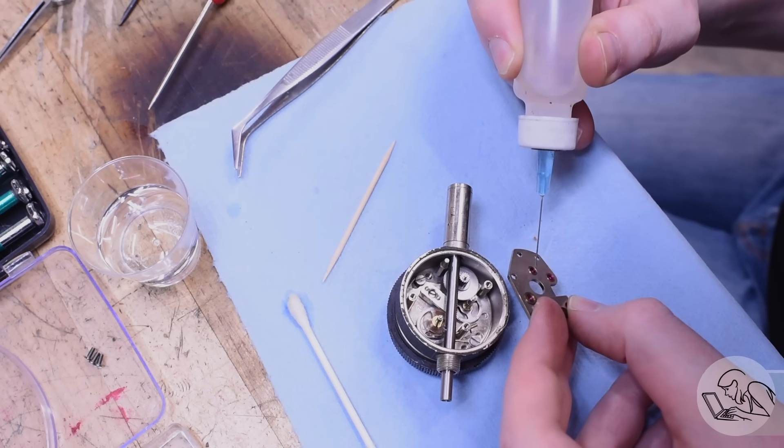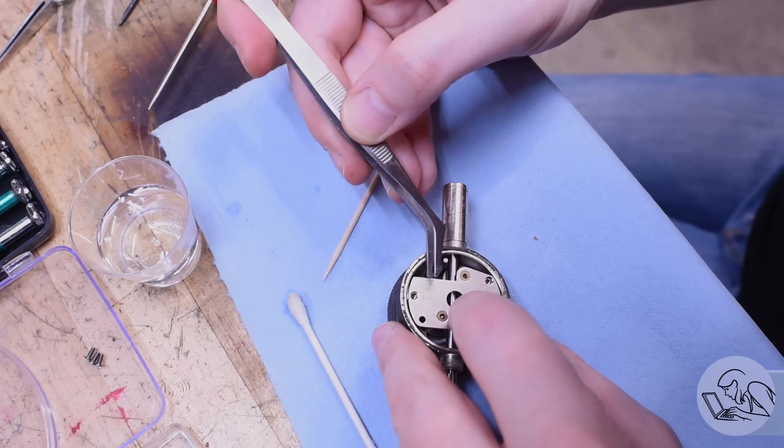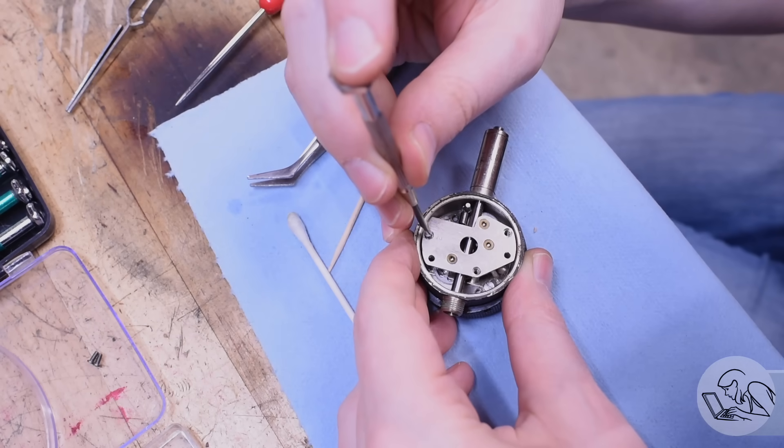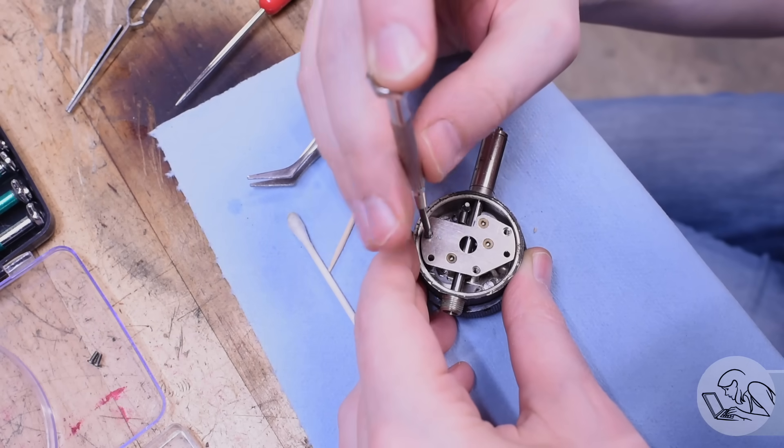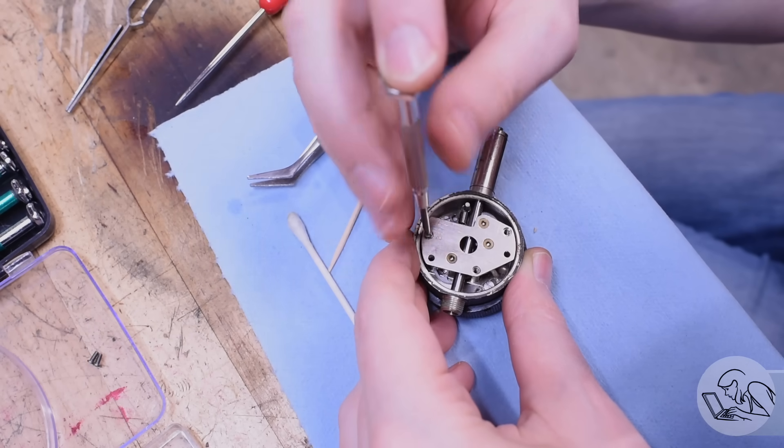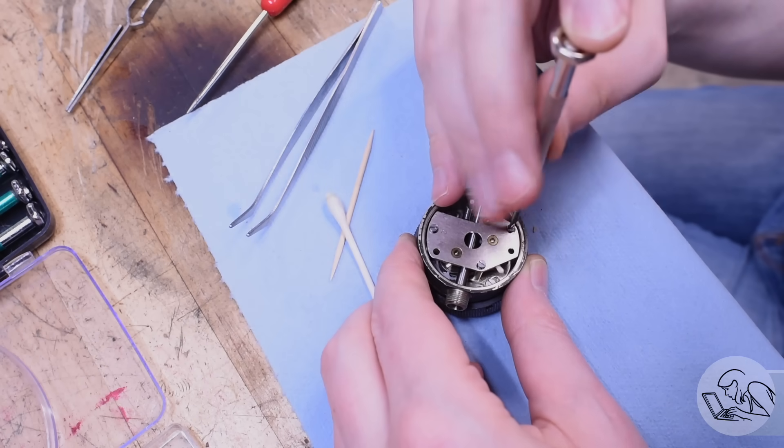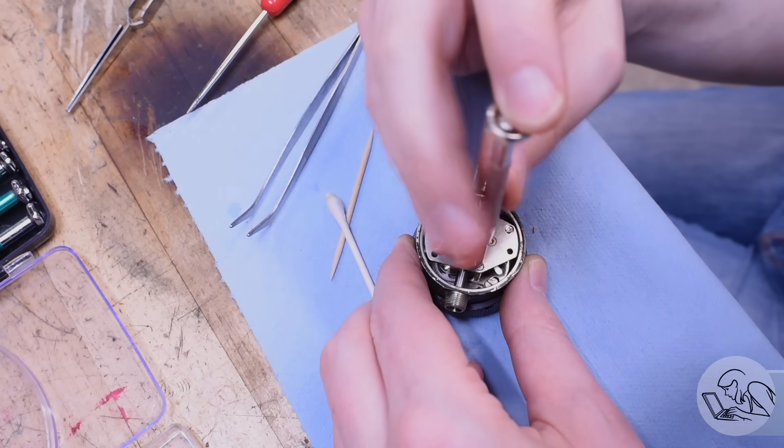And once again, a drop of oil on the jewels in the upper frame, and we can reinstall this. As with any other mechanism, when reinstalling the screws, you kind of want to go in a crosshatch pattern, tighten things evenly, and with these little screws, remember, they really don't need to be very tight at all.